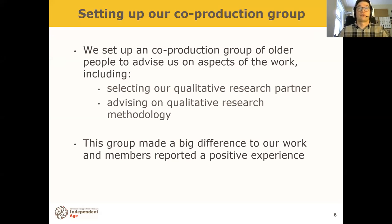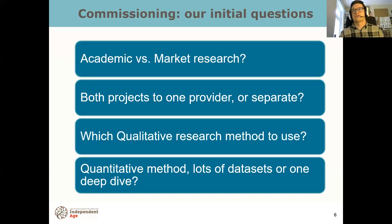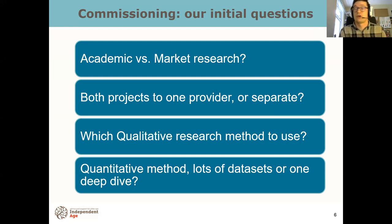We set up a co-production group of older people. They mainly inputted on the qual side, and we found them to be really, really useful — the group reported quite a positive experience as well. They had quite a big impact on some of our decisions. We put out our tenders and got bids back and were faced with some initial commissioning questions: academic versus market research, and whether to give both projects to one provider or keep them separate — essentially, do we give both the qual and the quant to a single market research provider, or split them up?